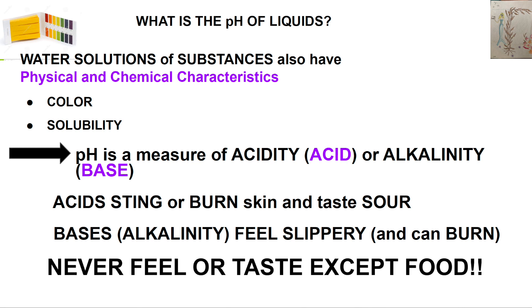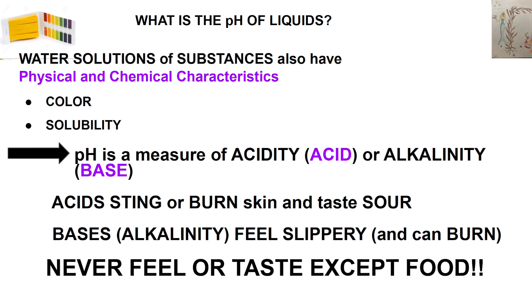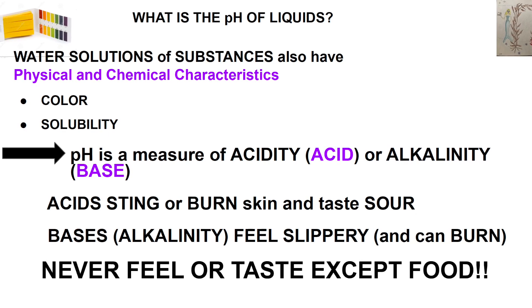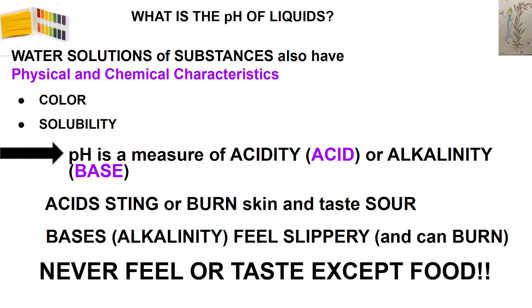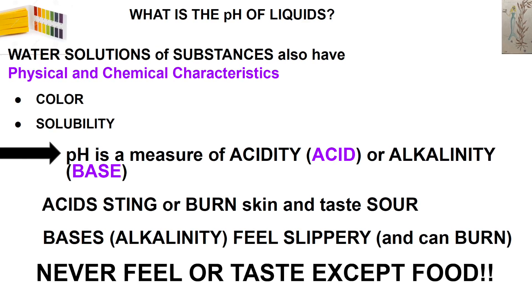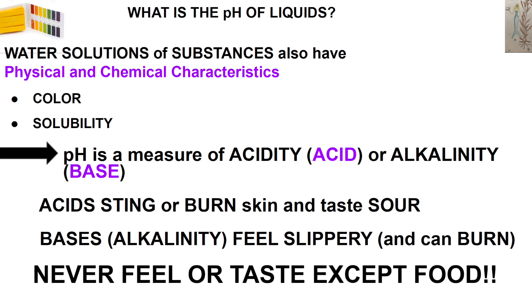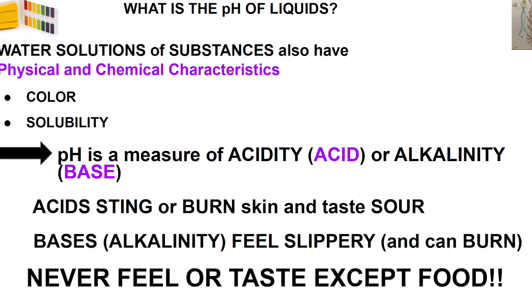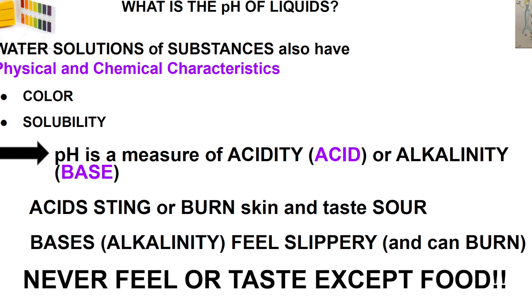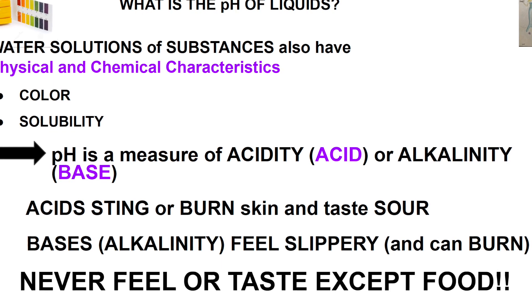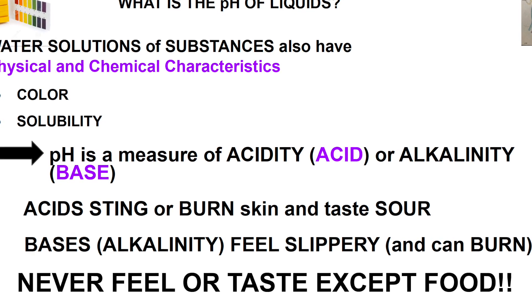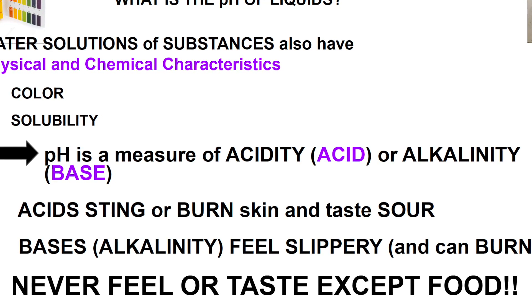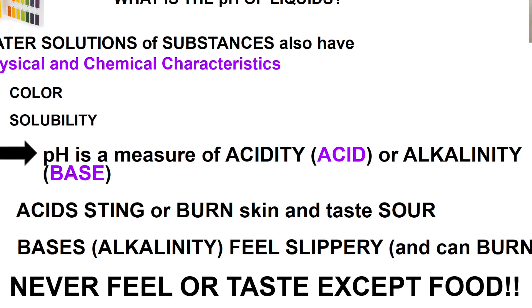We know that substances can have physical and chemical characteristics, and so do water solutions of those substances. They can have different colors. We learned about solubility, and here's another chemical characteristic: pH, or a measure of acidity or alkalinity. We know that acids can sting or burn your skin and often taste sour. We know that bases are alkaline and feel kind of slippery, but they can also burn when they're very strong. Never feel or taste chemicals unless you know they are food.